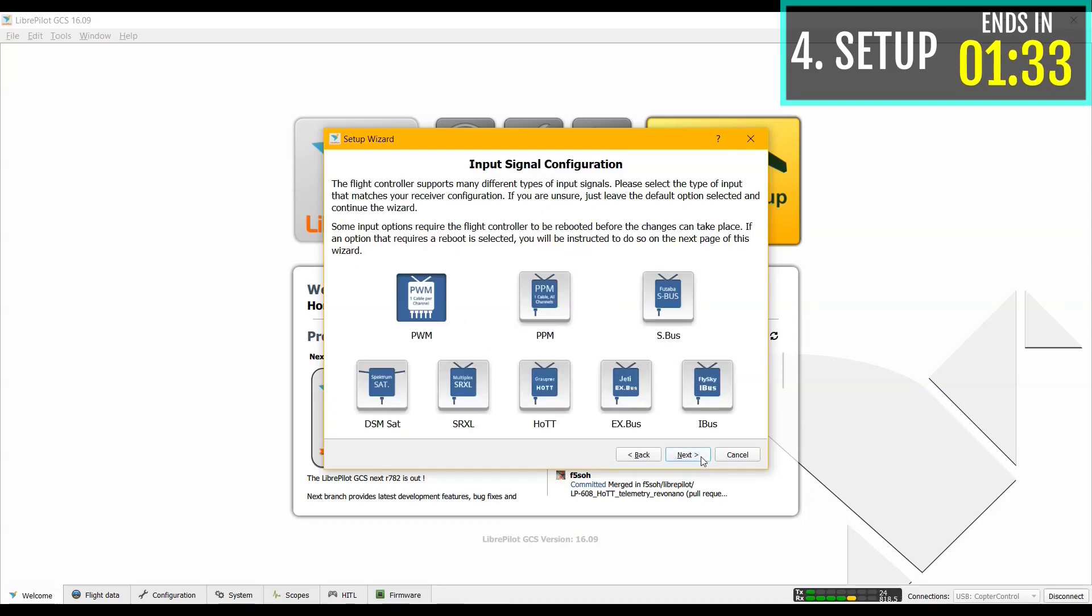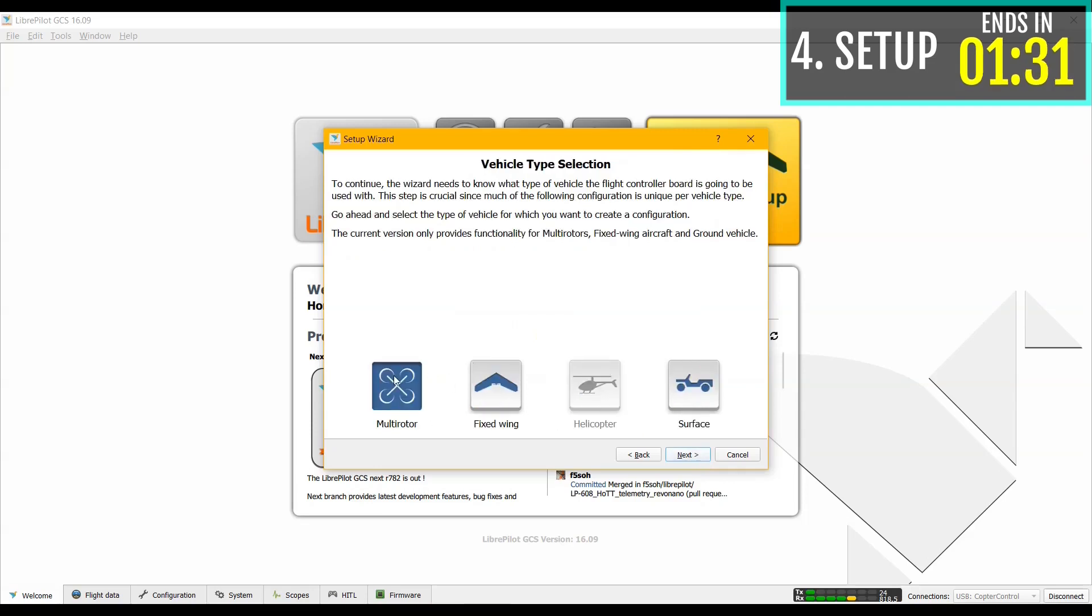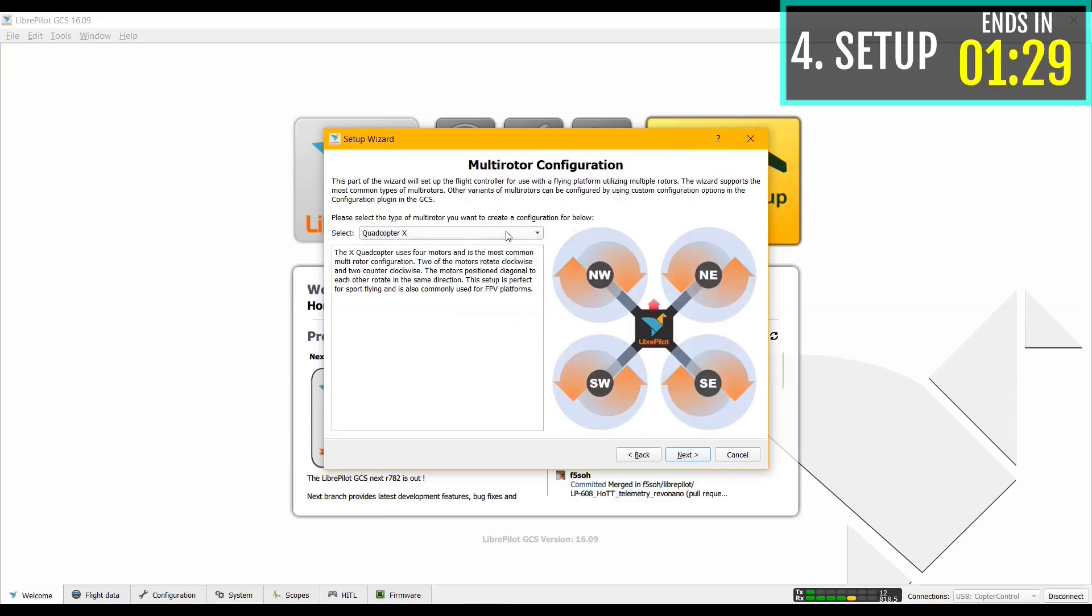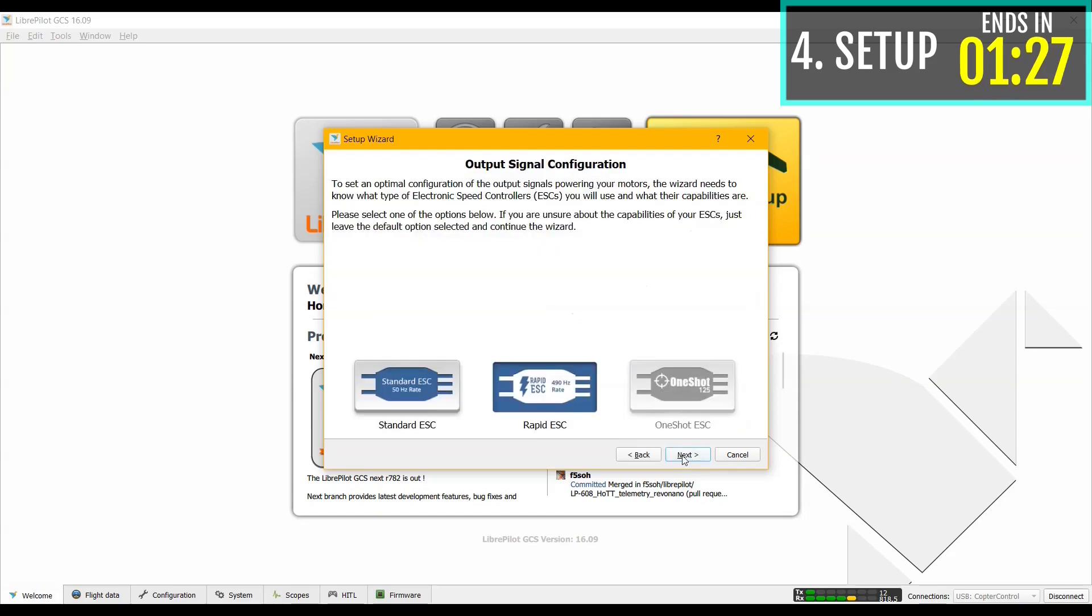Select PWM, then multi rotor, select quad copper X and then standard ESC.